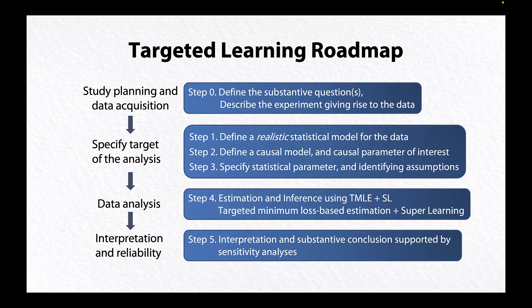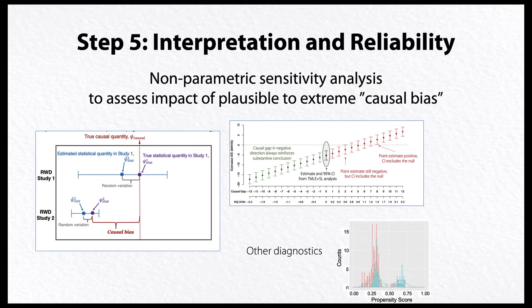a systematic guide starting with study planning and data acquisition to specification of realistic statistical and causal models, a target causal parameter and corresponding statistical parameter that can be estimated from data using TMLE combined with superlearning. The final step in the roadmap is to assign either a causal or a non-causal interpretation to the study finding and assess the robustness and reliability of any substantive conclusion.